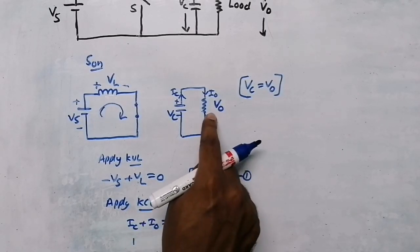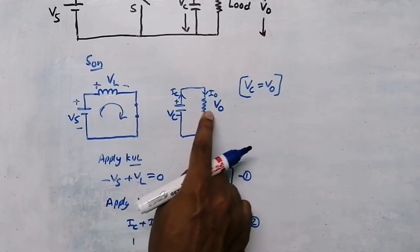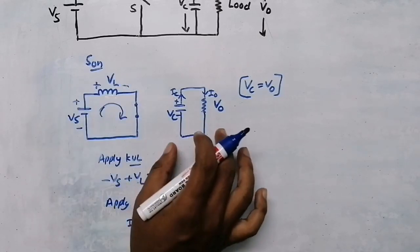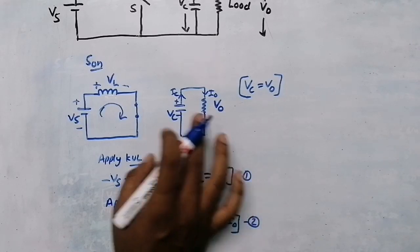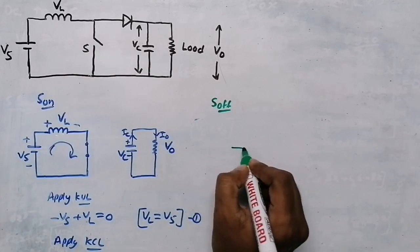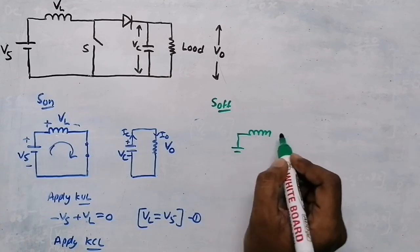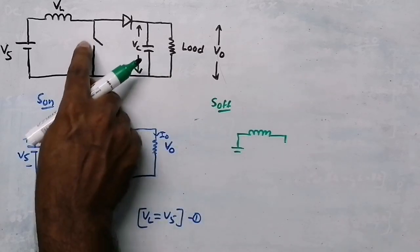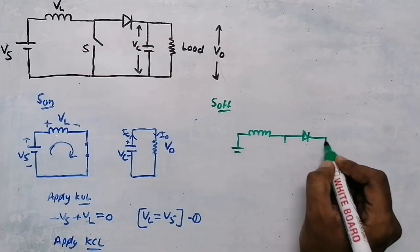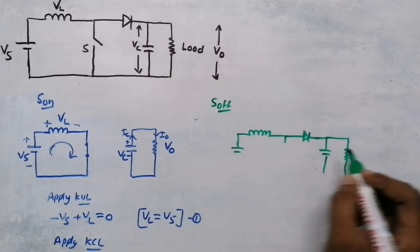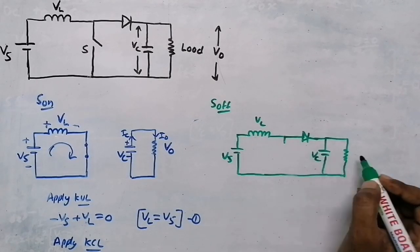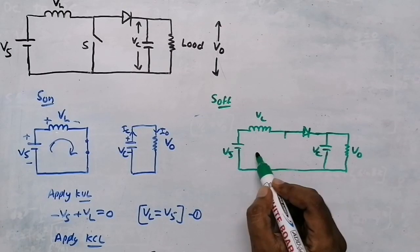So when the switch is on, the load is getting its supply not from the source but from the capacitor — the capacitor is delivering power to the output. When the switch is on, the capacitor is delivering power to the output because it is not connected to the source. Now in the second mode I am going to turn off the switch. The circuit will now have the source voltage, inductor, diode — the switch is open circuit so I'm not drawing it — then the capacitor and the load. This is the circuit when the switch is off, with source voltage VS, inductor voltage VL, capacitor voltage VC, and output voltage V₀.